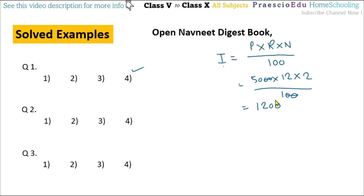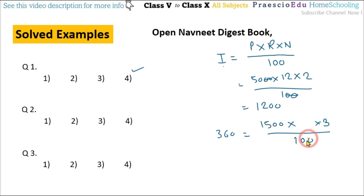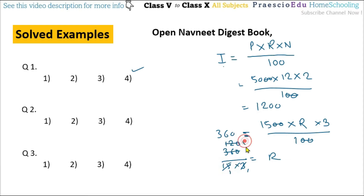Question number 2: the interest on ₹1500 for a period of 3 years is ₹360. We have to find the rate of interest R. The two zeros cancel on both sides, giving 360 / (15 × 3) = R. That is 360 / 45 = 8. So R equals 8% per annum — option number 2 is correct.